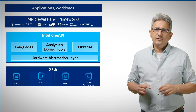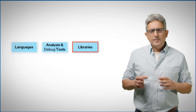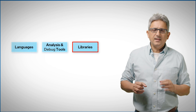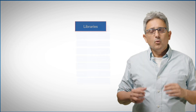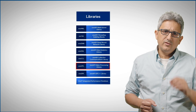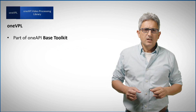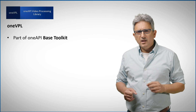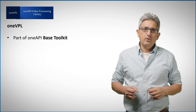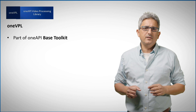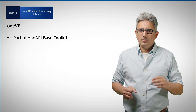In previous videos we've talked about the OneAPI components — the multi-device, multi-vendor, open spec libraries. One of them is OneVPL, the OneAPI Video Processing Library. You can get it with the OneAPI Base Toolkit by direct download, or remotely on the Intel Dev Cloud. It works on Linux and Windows.